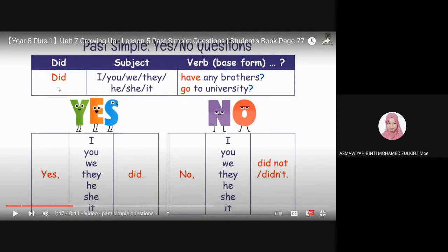For example, did you have any brothers? Or did he go to university? Alright? Okay, and then the answer would be yes or no.